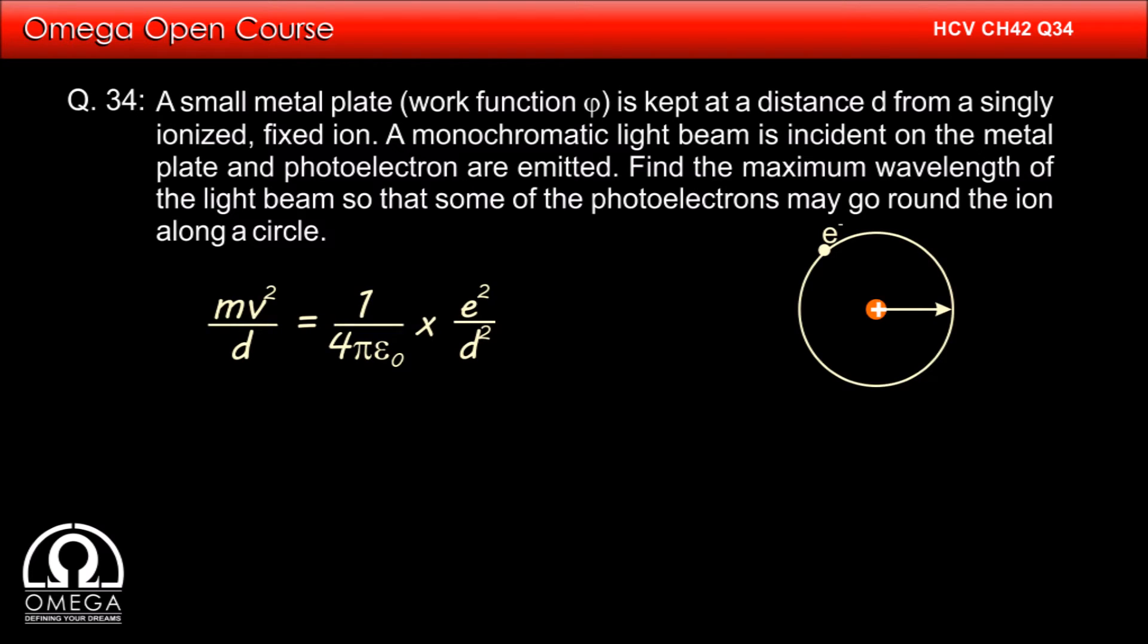Since the electron is moving in the circular orbit of radius d, the required centripetal force must be provided by the electrostatic attraction between the electron and the ion. Therefore, mv square divided by d must be equal to 1 by 4 pi epsilon not into e square divided by d square.